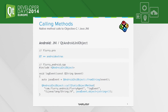The QAndroidJniObject allows you to create custom Java object instances and call object methods on those instances. As an example from our Flurry plugin, we create a Java string instance called "javaEvent" using QAndroidJniObject::fromString with the actual event name, and then call the static method logEvent on the FlurryAgent — which is shipped with the Flurry framework — passing that Java event to it.